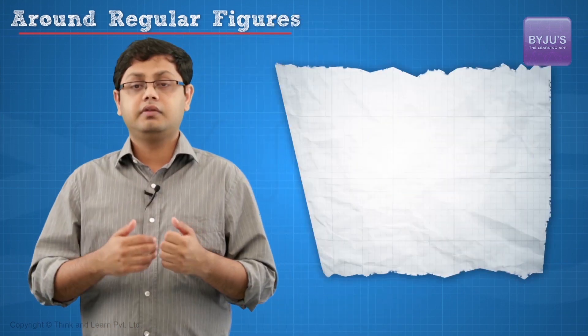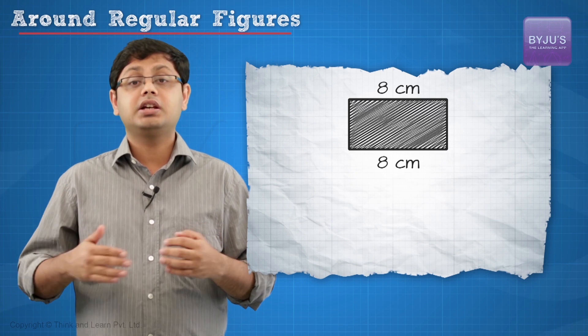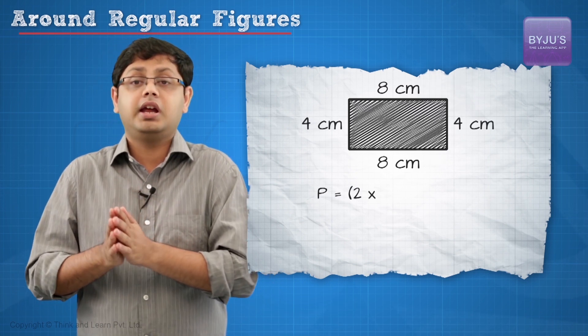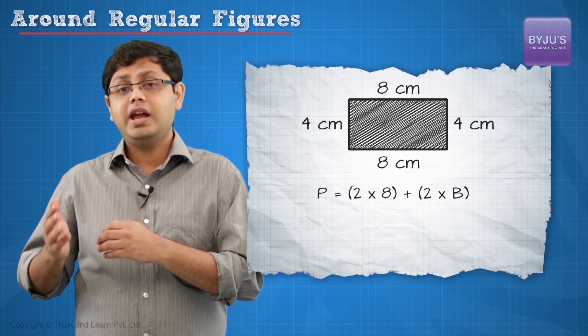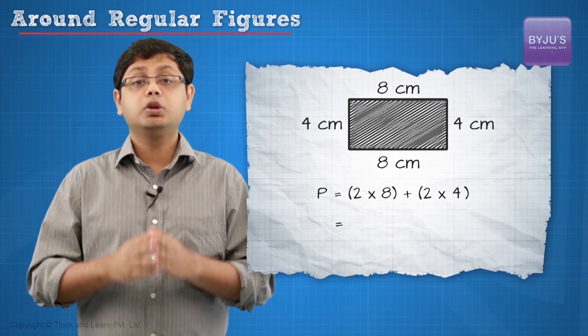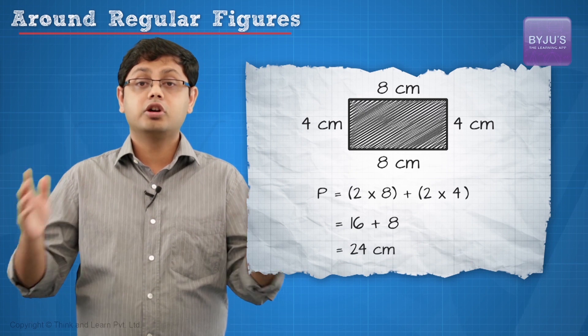Let's take an example. If the length of the rectangle is say 8 centimeters and the breadth is 4 centimeters, then plugging values into this formula, L will take a value of 8 and B will take a value of 4. So the perimeter P will be 2 times 8 plus 2 times 4 which is going to be 24 centimeters.